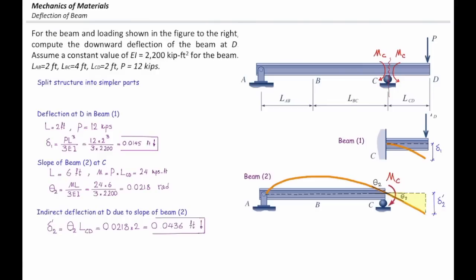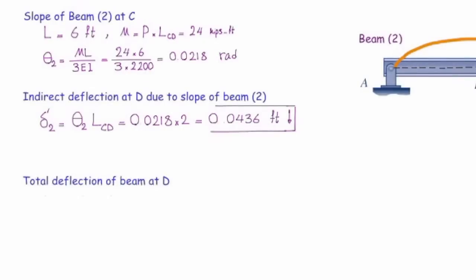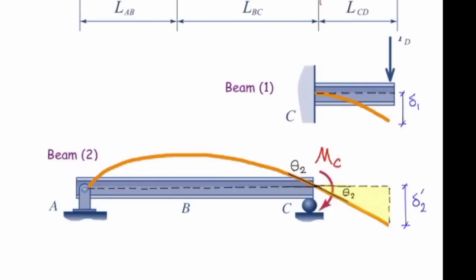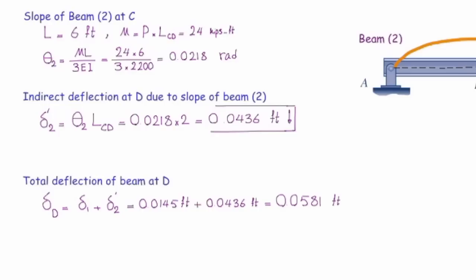Now we can determine the total deflection at the right end using the principle of superposition. Total deflection at D: delta_D = delta one + delta prime two = 0.0145 ft + 0.0436 ft. Both components act downward — beam number one and beam number two both deflect downward — so we add them together. The overall deflection at point D is 0.0581 feet.